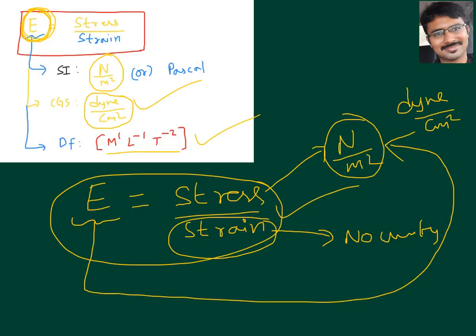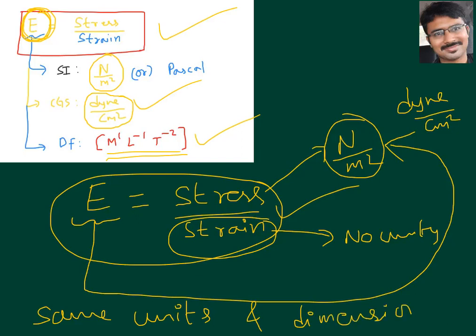The dimensional formula for stress is M¹L⁻¹T⁻². For modulus of elasticity also we get the same formula. So stress and modulus of elasticity have the same units and dimensions, while strain has no units and no dimensional formula.